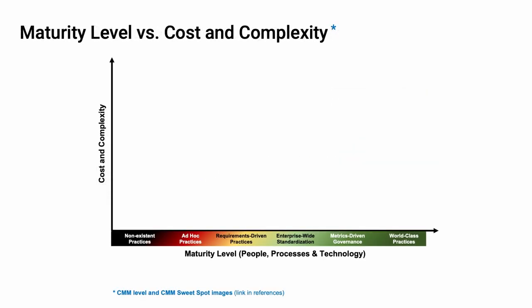Let's consider process maturity level versus its cost and complexity. On the x-axis we can see the maturity level, which can represent processes, people, or technology. On the y-axis we show the cost and complexity of implementation. At maturity level 0, noted as CMM 0, nothing is done — there are no practices in place for the particular activity unless otherwise specifically indicated. This is going to be our base assumption.